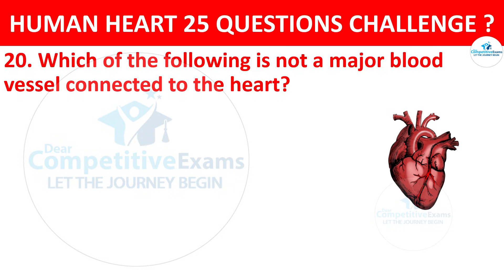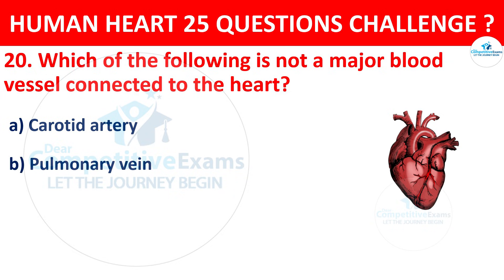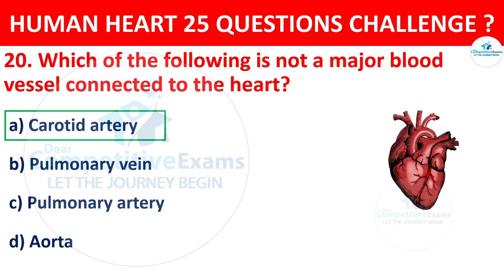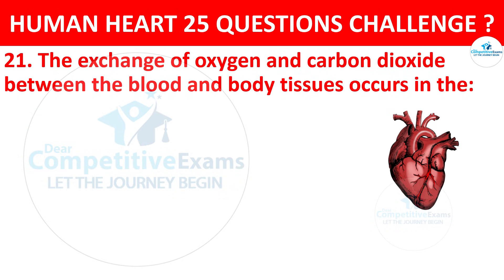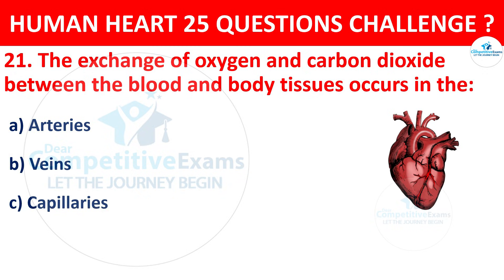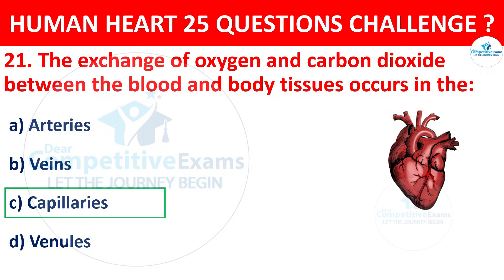Question number 20. Which of the following is not a major blood vessel connected to the heart? Options: Carotid artery, Pulmonary vein, Pulmonary artery, or Aorta. Correct answer is A, that is Carotid artery. Question number 21. The exchange of oxygen and carbon dioxide between the blood and body tissues occurs in the: Arteries, Veins, Capillaries, or Venules? Correct answer is C, that is Capillaries.